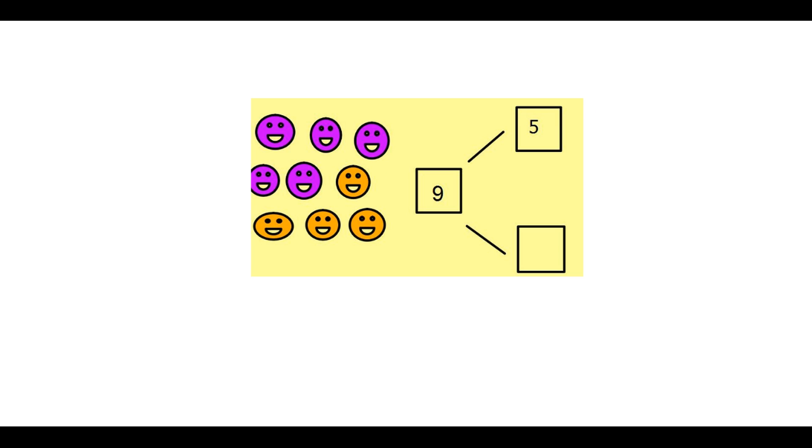Five is one part. So then I need to count one, two, three, four orange faces. That's the other part of my whole over here. So we have the whole and over here we have the part.